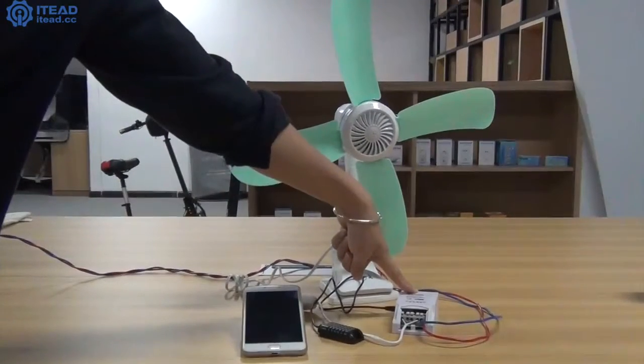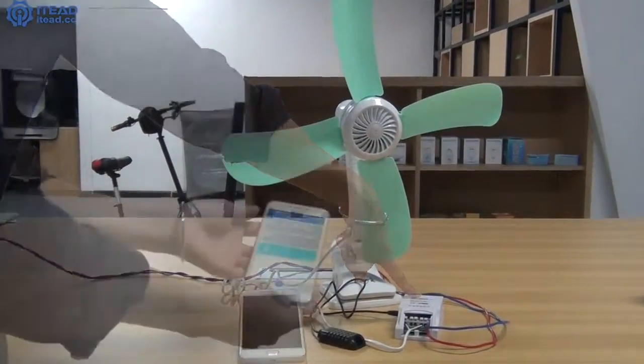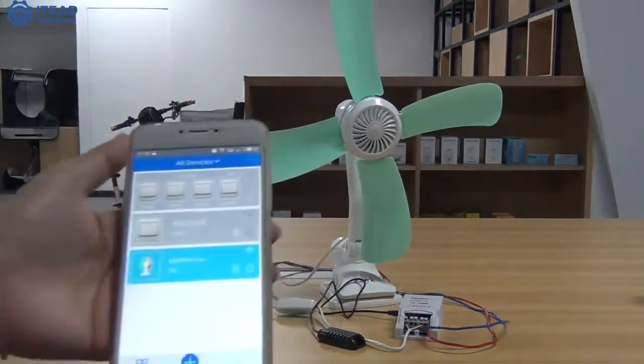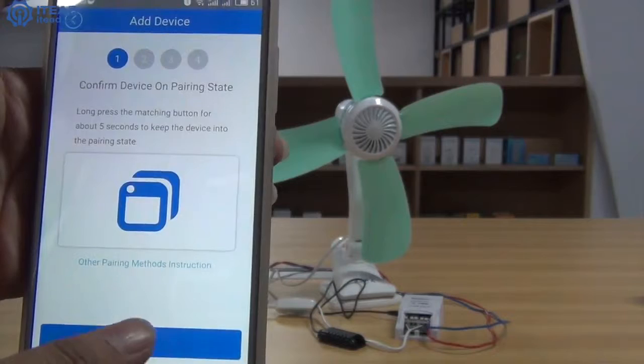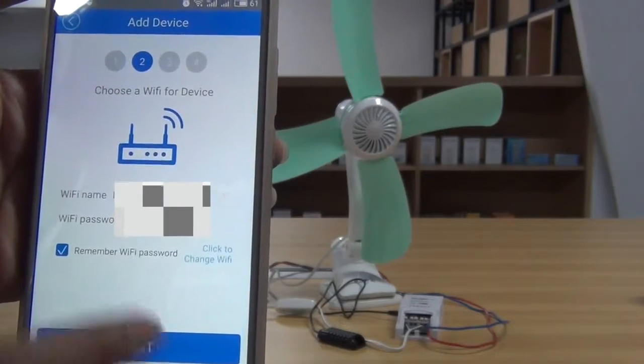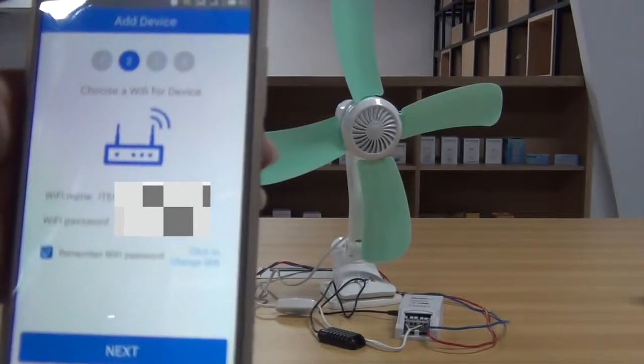Press and hold the button of Sonoff TH for a few seconds. Download and install eWeeLink. Hit the add device button in this app. Enter your Wi-Fi account and password. Click next.